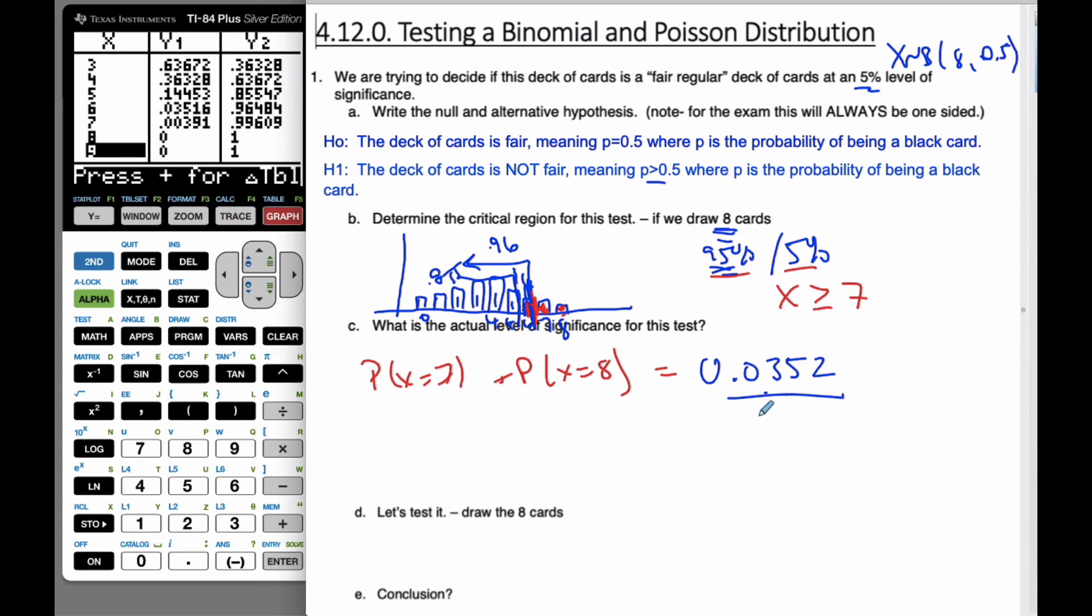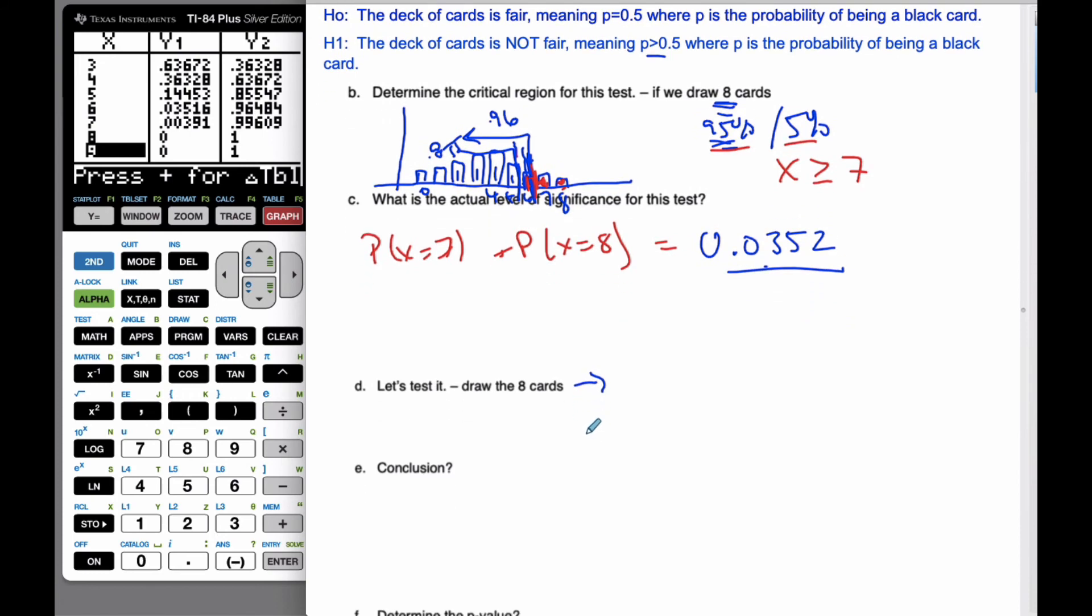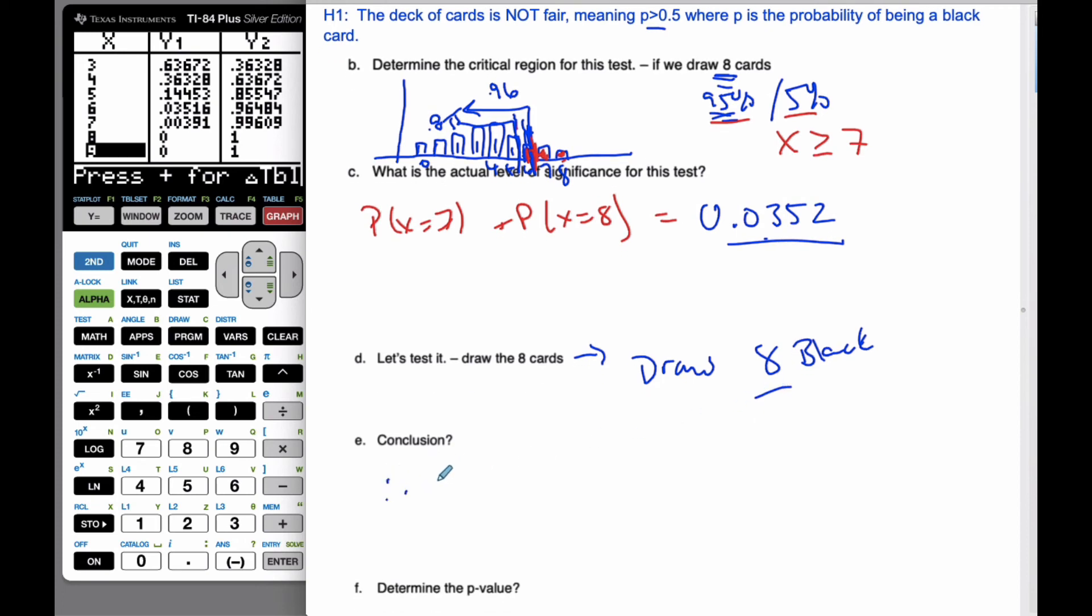Here is our level of significance of the test. So, in class, I actually perform an experiment, and we do it, so let us pretend that we draw 8 black cards. If we actually draw 8 black cards, the conclusion then, well, therefore, we would reject H0 and say it is an unfair deck, an unfair deck, as the probability is more than 0.05.